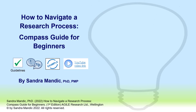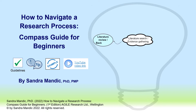Let's have a closer look at the content of the Compass Guide book for beginners. The book offers guidelines, tips and tools for searching and organizing literature and writing a literature review, which are the first tasks on a research journey. This process helps you learn about your research topic, identify knowledge gaps and shape your research questions. Once written, the literature review or background section provides a rationale for your research project.